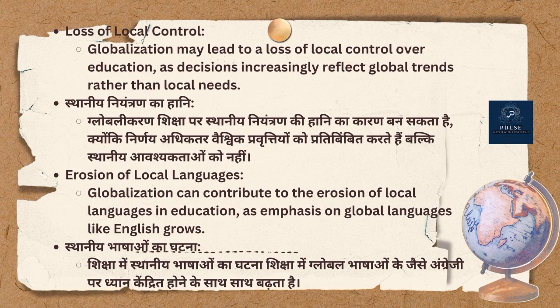9. Loss of Local Control: Globalization may lead to a loss of local control over education as decisions increasingly reflect global trends rather than local needs. स्थानीय नियंत्रण का हानि: Globalization शिक्षा पर स्थानीय नियंत्रण की हानि का कारण बन सकता है क्योंकि निर्णय अधिकतर वैश्विक प्रवृत्तियों को प्रतिबिंबित करते हैं। 10. Erosion of Local Languages: Globalization can contribute to the erosion of local languages in education as emphasis on global languages like English grows. Thank you. Next we will do privatization in the next video.